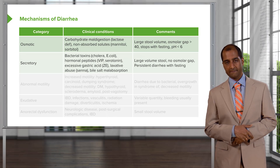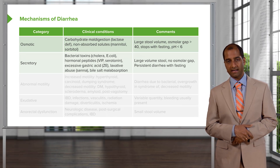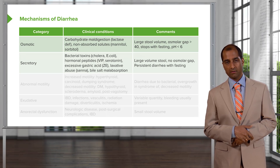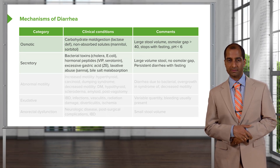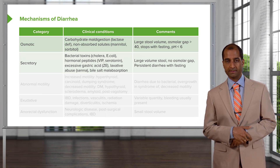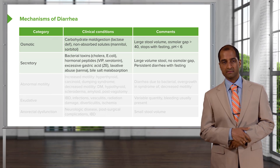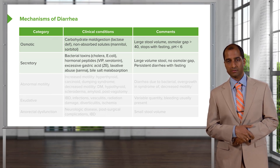E. coli — there's something called ETEC. Remember from microbiology, E. coli can also result in a secretory type of diarrhea. You also have laxatives such as Senna, and all of this may result in secretory diarrhea.